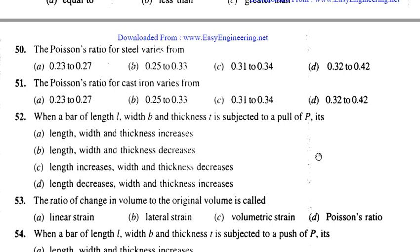Strength of Material chapter. I am going to start the third lesson covering questions 50 and 51. Question 51: Poisson's ratio of cast iron varies from...